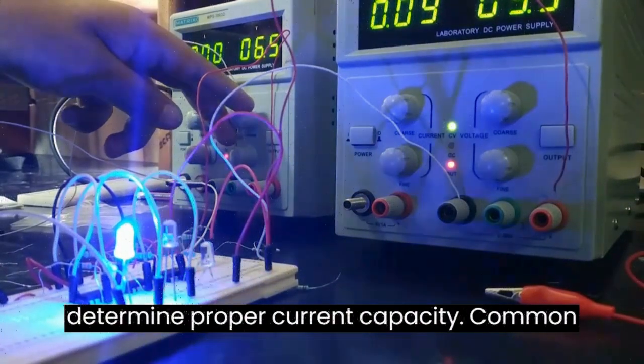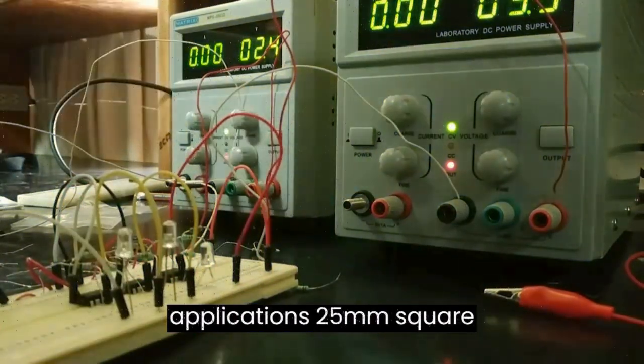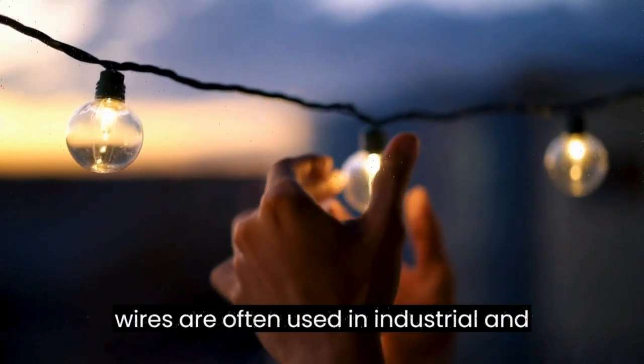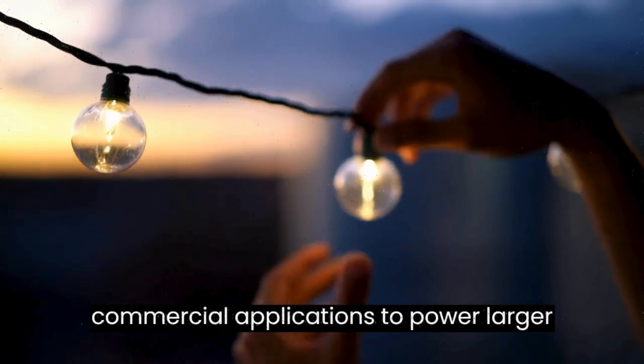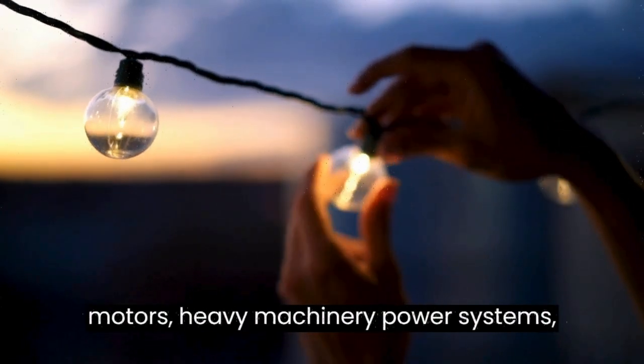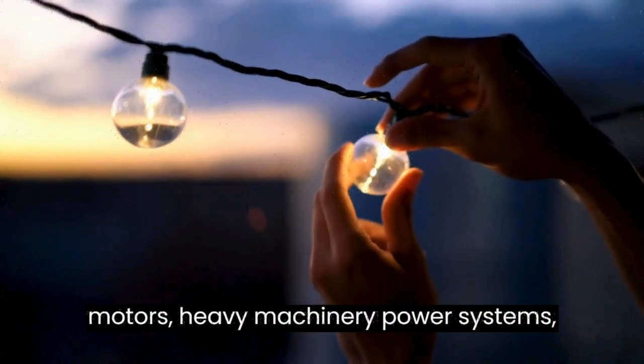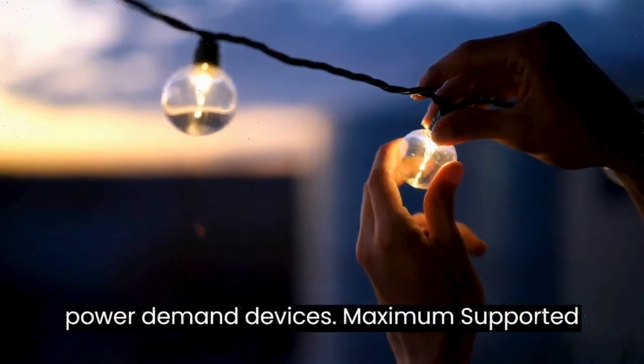Common applications: 25 millimeter square wires are often used in industrial and commercial applications to power larger equipment such as industrial electric motors, heavy machinery, power systems, large electrical panels, and other high power demand devices.